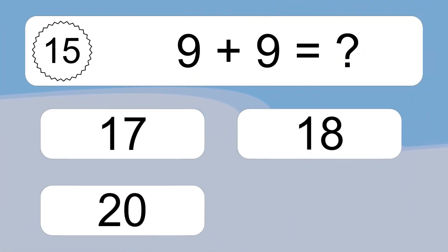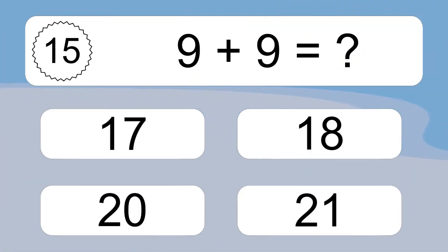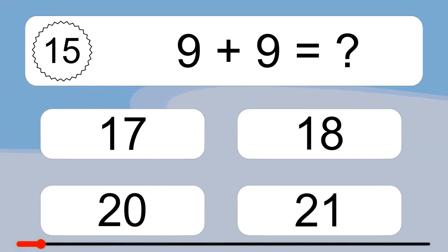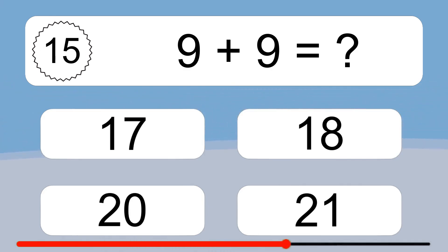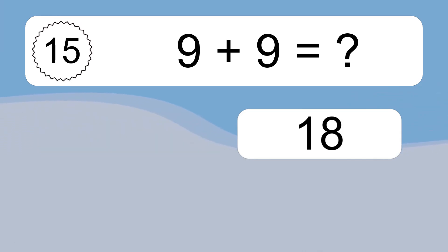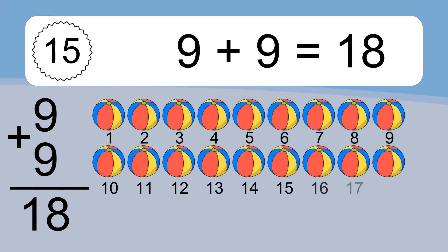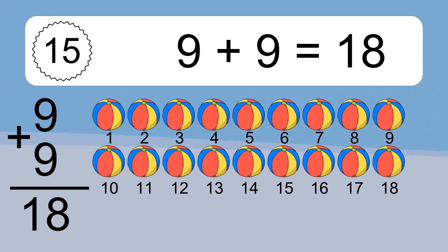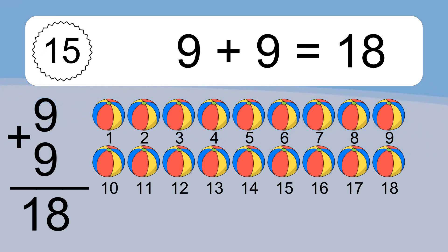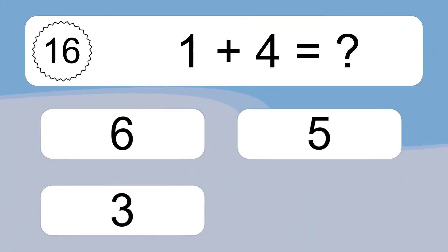9 plus 9 equals what? 9 plus 9 equals 18. Let's count it: 1, 2, 3, 4, 5, 6, 7, 8, 9, 10, 11, 12, 13, 14, 15, 16, 17, 18.